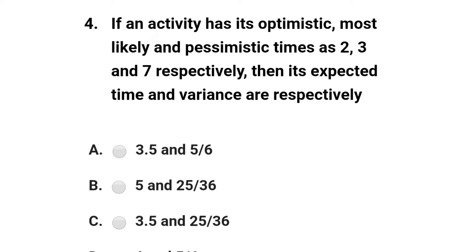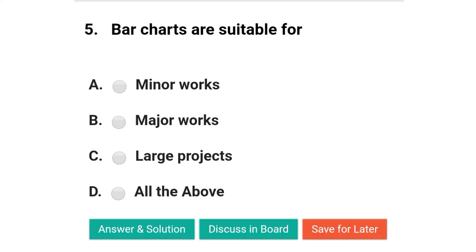Next question: if an activity has its optimistic, most likely and pessimistic time as 2, 3 and 7 respectively, then the expected time and variance are respectively — option A: 3.5 and 5/6; option B: 5 and 25/36; option C: 3.5 and 25/36; option D: 4 and 5/6. The correct answer is option C: 3.5 and 25/36.